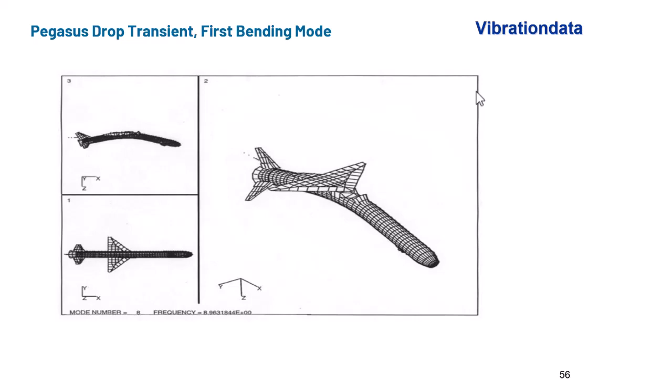Here's a finite element bending mode of a particular Pegasus, highly exaggerated, what the fundamental bending mode would look like. The frequency at the bottom is 8.963 hertz, so for this particular mission, maybe there was a heavier, maybe a maximum weight payload was part of this model.